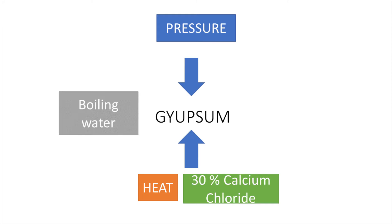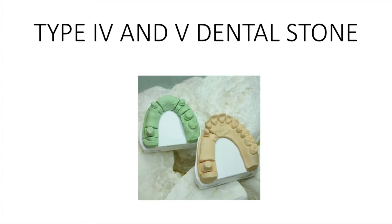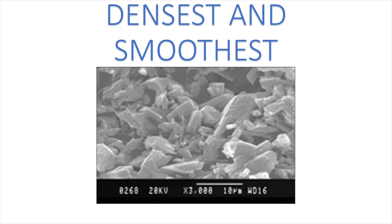In the third process, if you heat calcium sulfate dihydrate under pressure in boiling water with 30% calcium chloride, you get something called densite, which is also alpha hemihydrate. These products are available as type 4 or type 5 dental stone — that is dental stone high strength or high strength high expansion. Out of all gypsum products, these are the densest and smoothest crystals available.